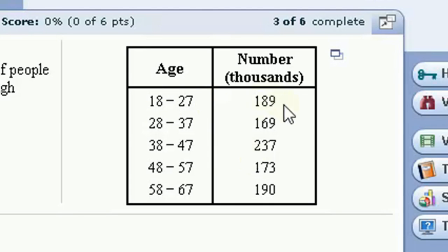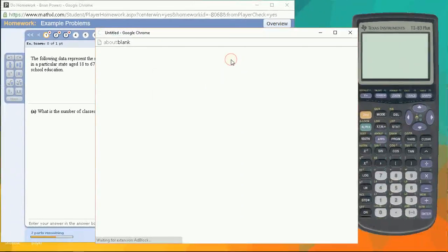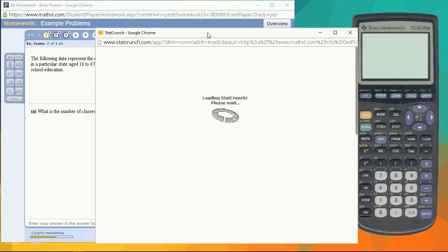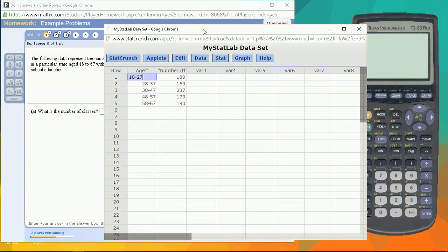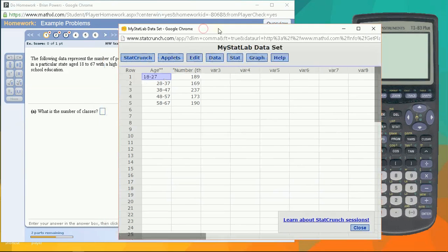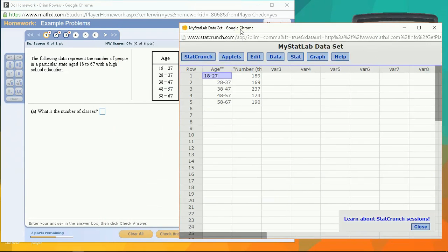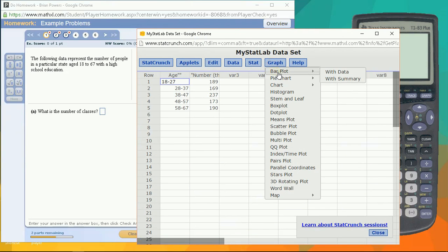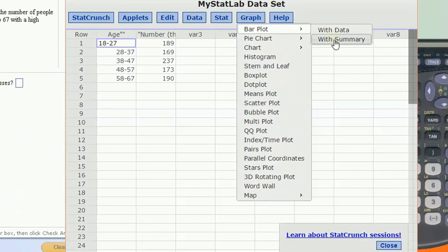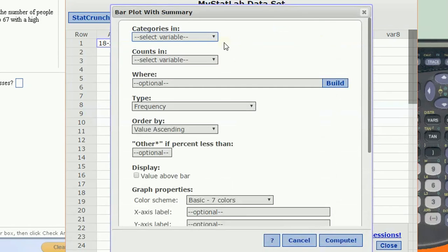So let's open this up in StatCrunch and just see how we can visualize this. I want to take this and create what we would call a histogram. In fact, in this one, because we already have the bins labeled, I'm going to create a bar plot for this with summary data. I don't have the original data. I have the summary data. I have categories and I have counts.